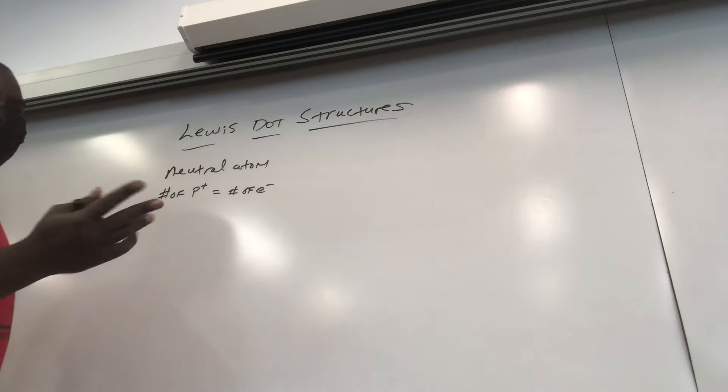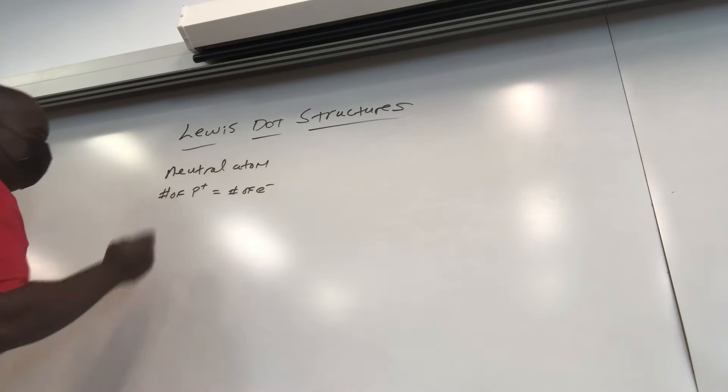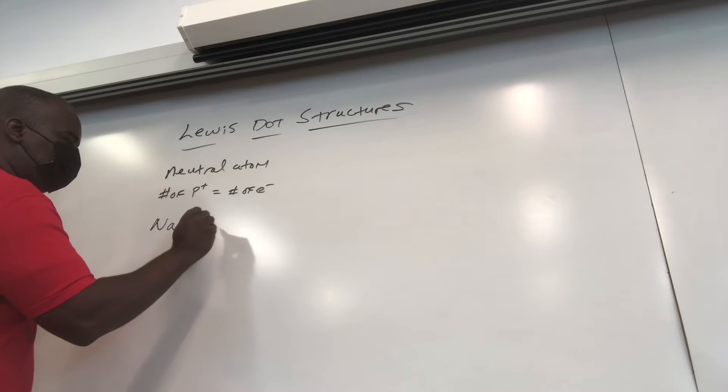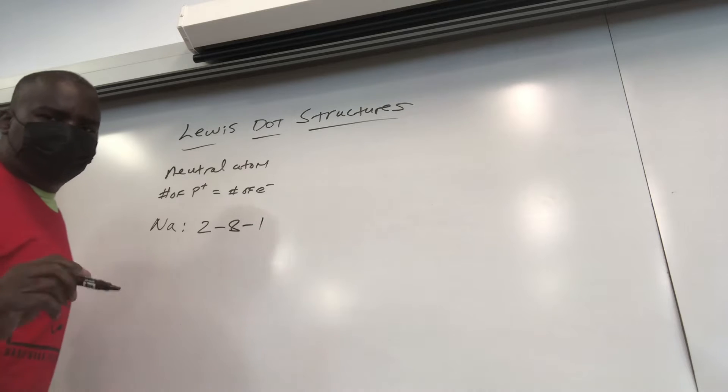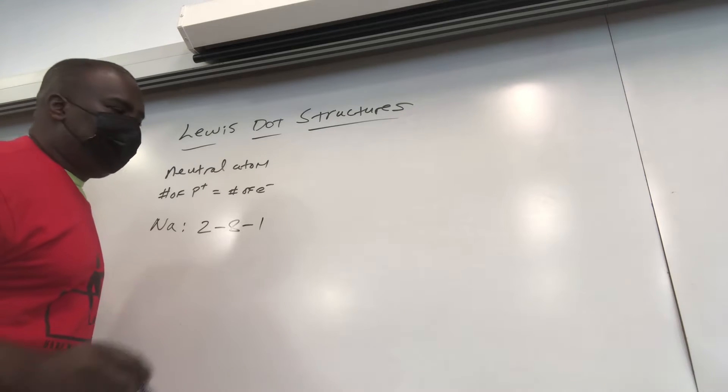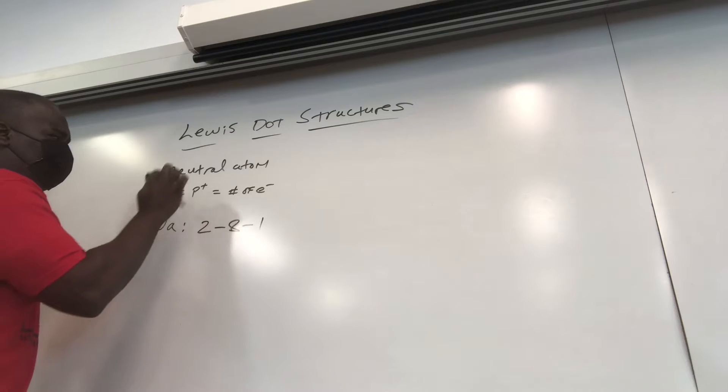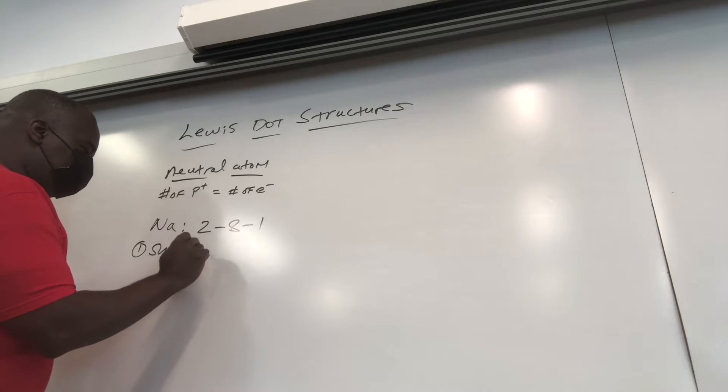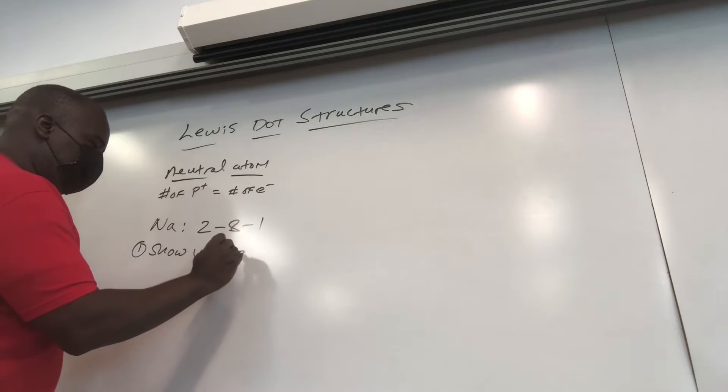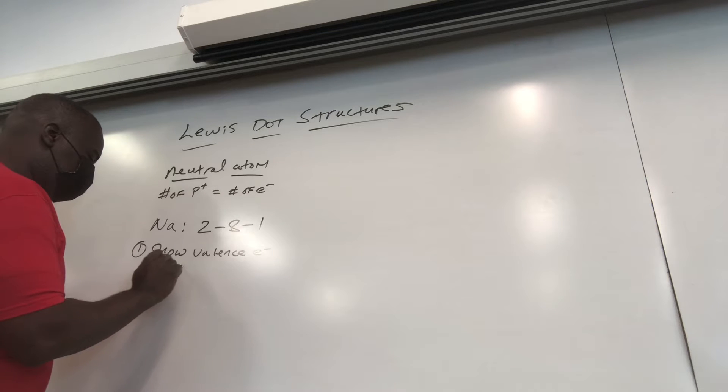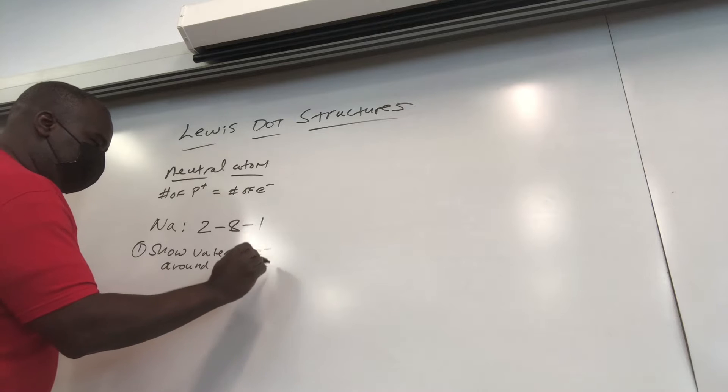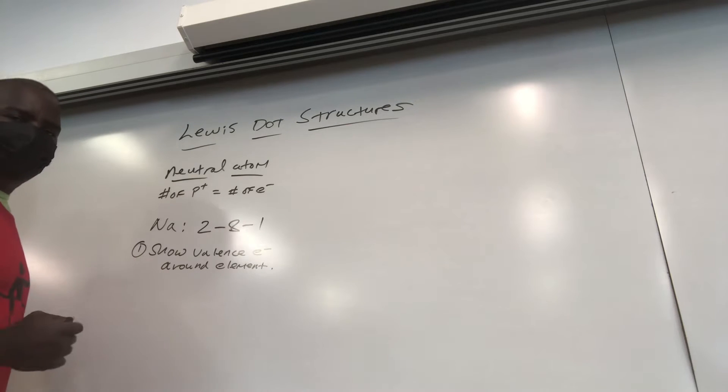I like either lithium or sodium, so I'm going to choose sodium. Now sodium, Na, has a configuration of 2-8-1 in the ground state. Now, in the dot structures for a neutral atom, I'm going to write the rule here. One: show valence electrons around the element. That's all you got to do basically for the neutral atom.